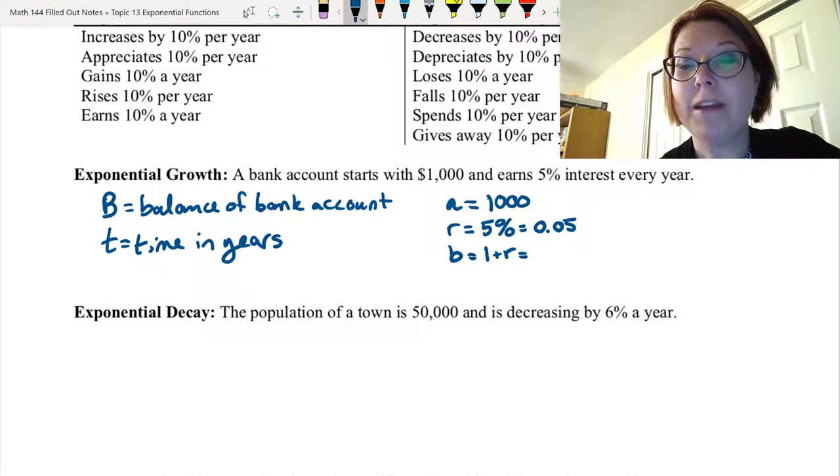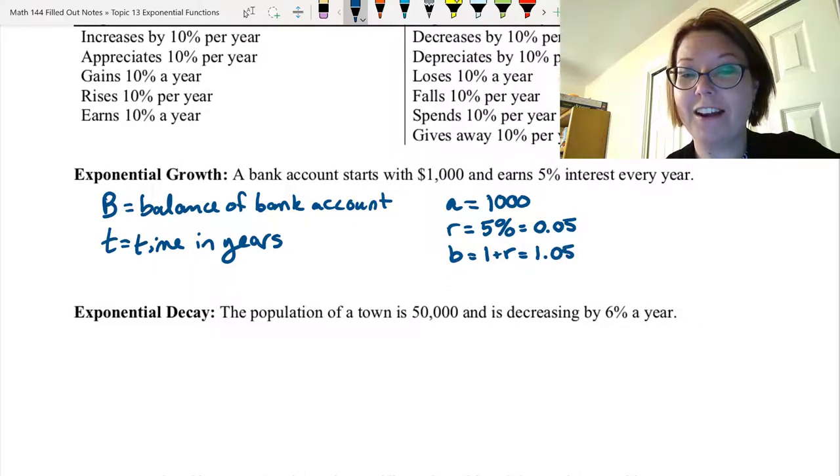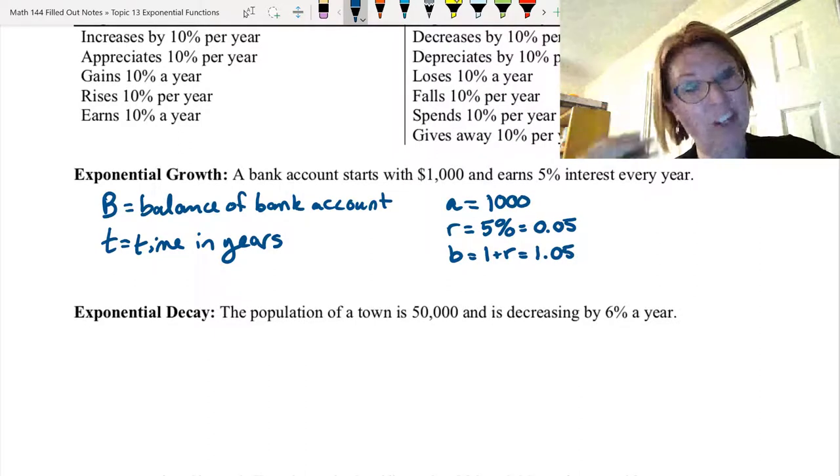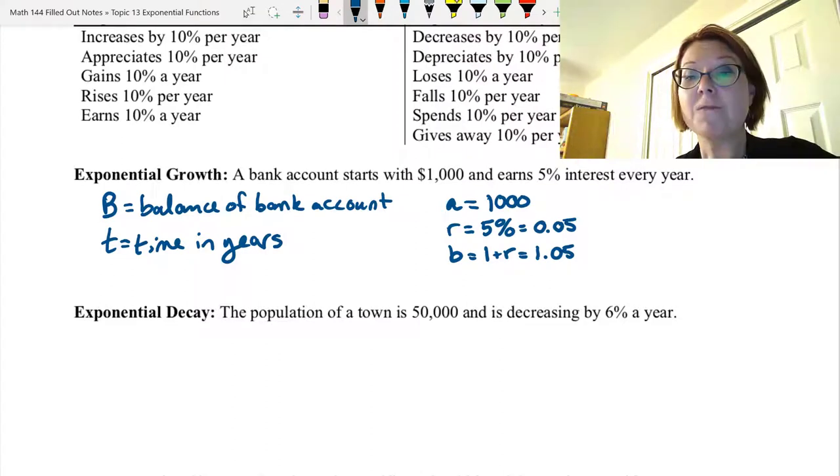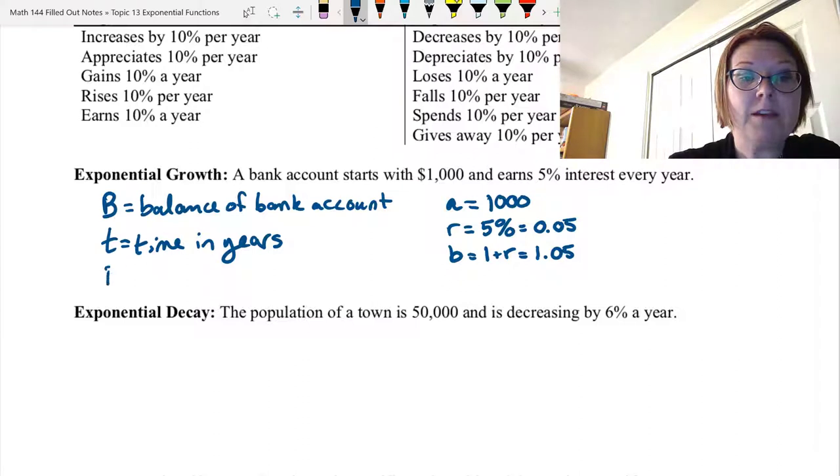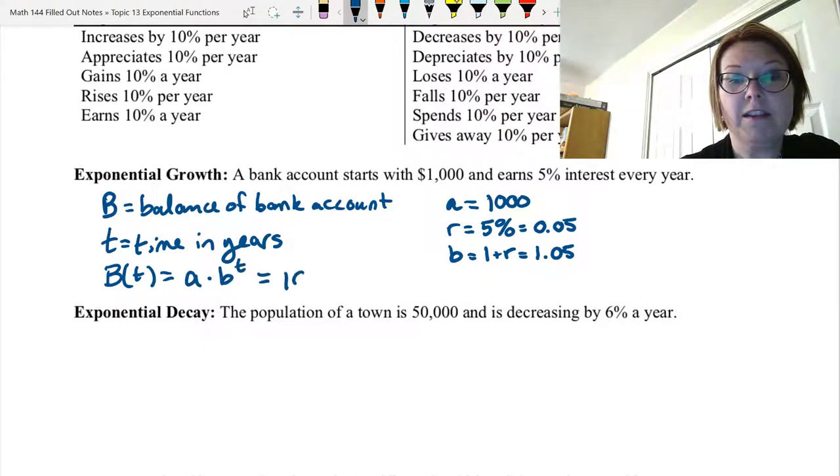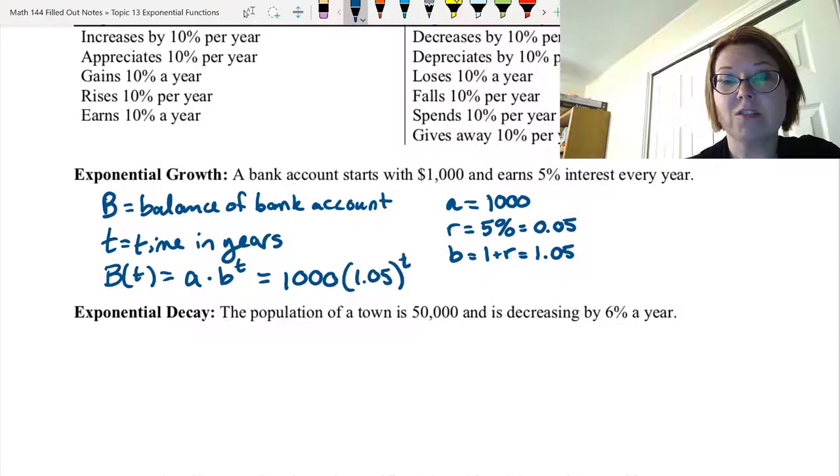1 plus 0.05 is going to be 1.05. Or think of that as 105%. It's growing. From this, we can write an equation for this model. We could say that capital B of T is equal to, we know the model should be A times B to the T. So in this case, it's going to be 1,000 times 1.05 in parentheses to the T.